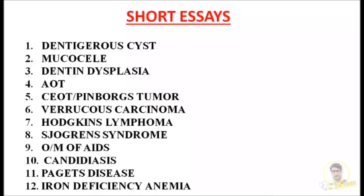The sixth important question is verrucous carcinoma — a neat labelled diagram of verrucous carcinoma is very important, along with the important histological features and pathology. The seventh important question is Hodgkin's lymphoma. Looking into the diseases of blood chapter, you should be thorough with Hodgkin's lymphoma as well as non-Hodgkin's lymphoma.